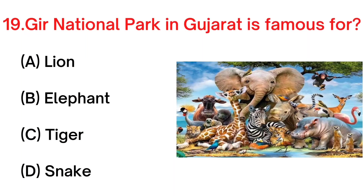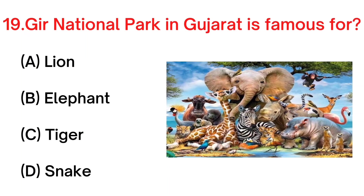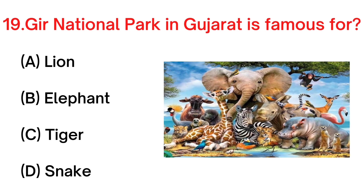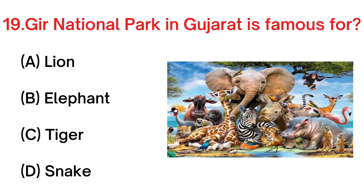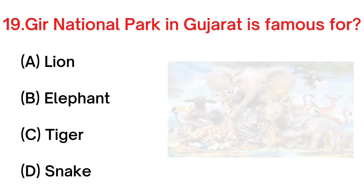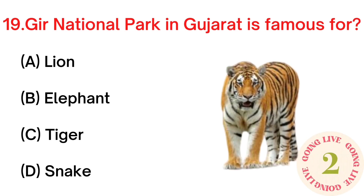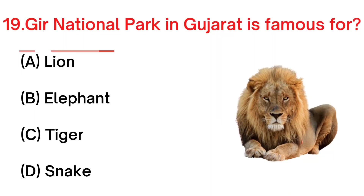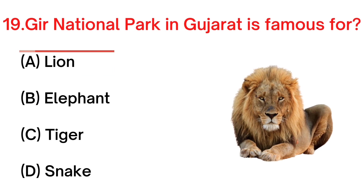Your next question: Gir National Park in Gujarat is famous for A. Lion, B. Elephant, C. Tiger, D. Snake. Your answer is A. Lion.